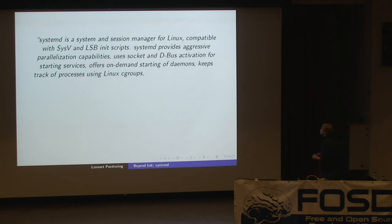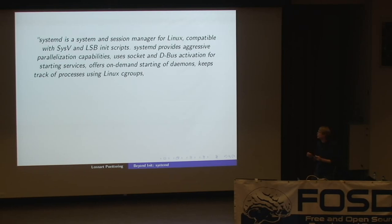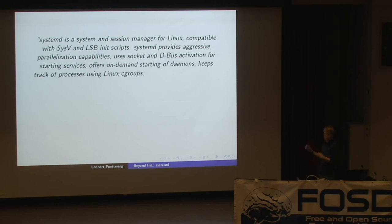It keeps track of processes using Linux cgroups. Linux cgroups is a kernel interface introduced around ten versions ago. Cgroups is short for control groups. This is very useful to not only start and stop services, but also keep precise track of every process that a service spawns — and that can be quite a lot. For example, if Apache starts up, it can start a gazillion of CGI scripts and whatnot. We use Linux cgroups to keep track of them, and there'll be a little bit more detail about that later on.